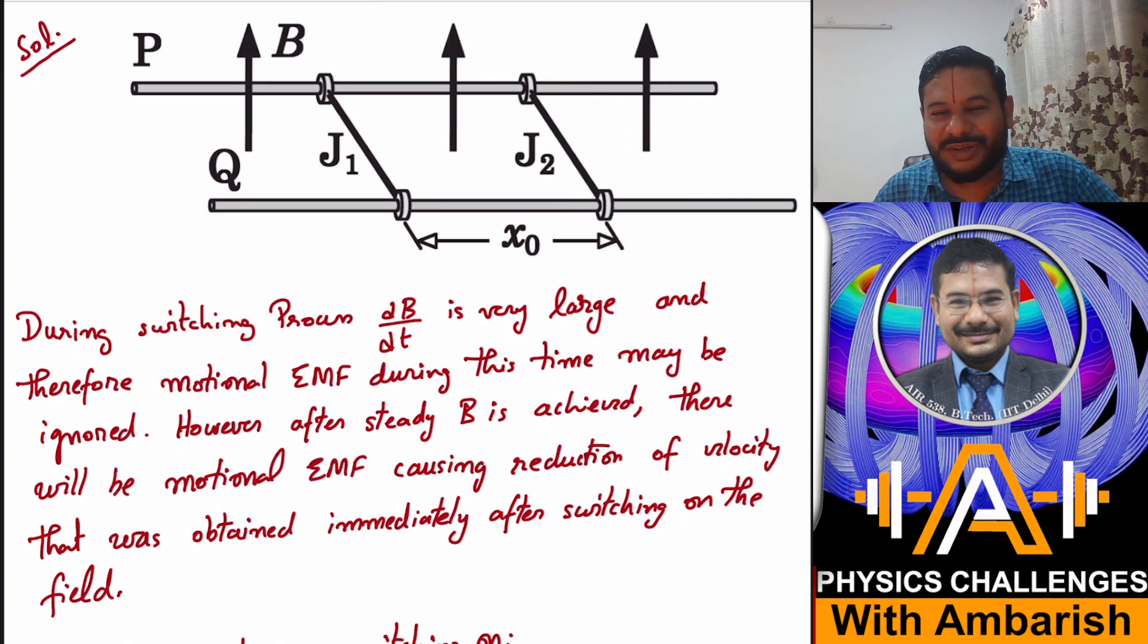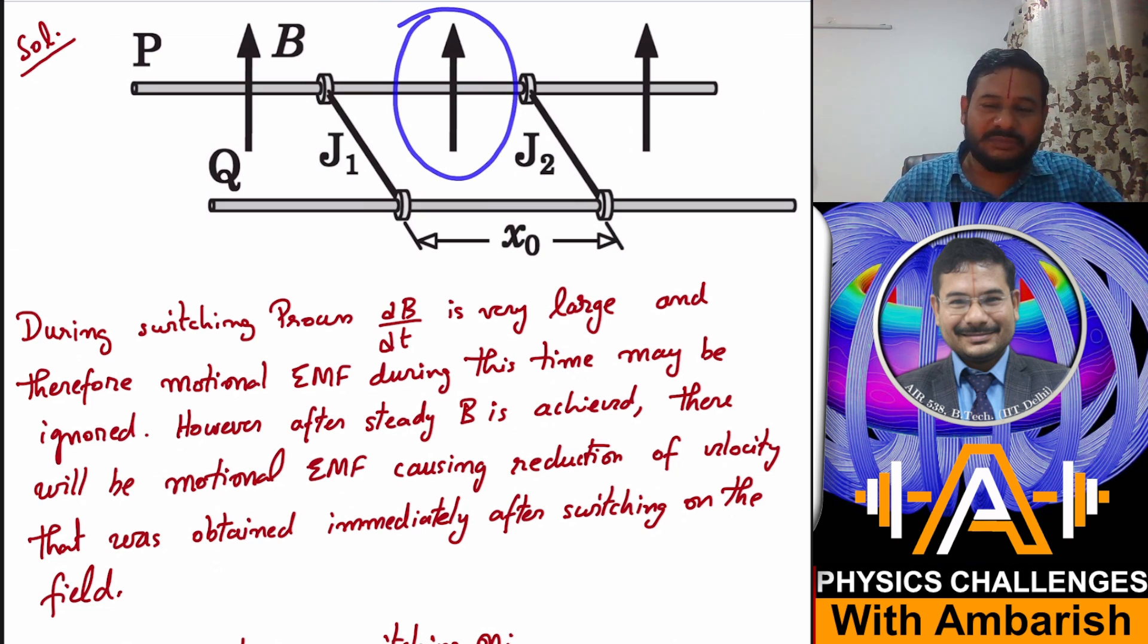Because of that current, you know that v cross B dot dl is the motional EMF. Because of the current there's some velocity, maybe not so small velocity but some velocity will be there in these jumpers during the process of increasing magnetic field.